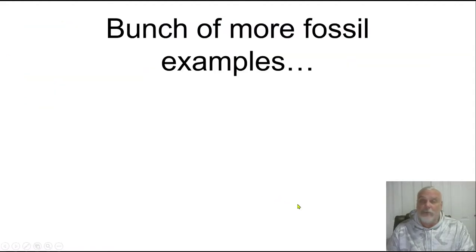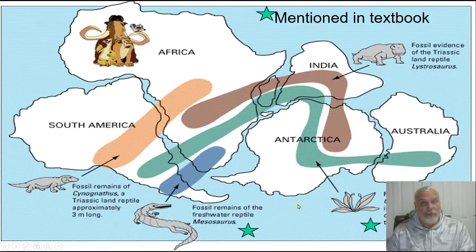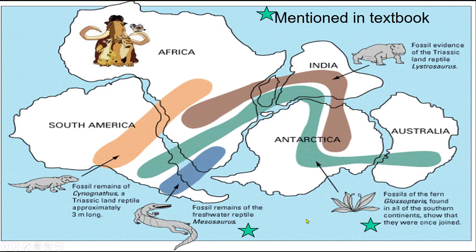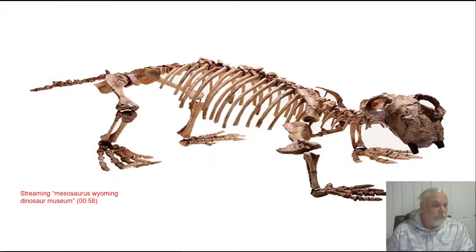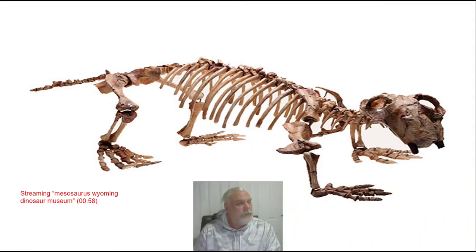There are a bunch more fossil examples than just that — go ahead and take a look at this chart. The Mesosaurus could swim, but it just wouldn't swim that far. Here's a skeleton of the Mesosaurus to give an idea of what it looks like — kind of reminds me of a dog.